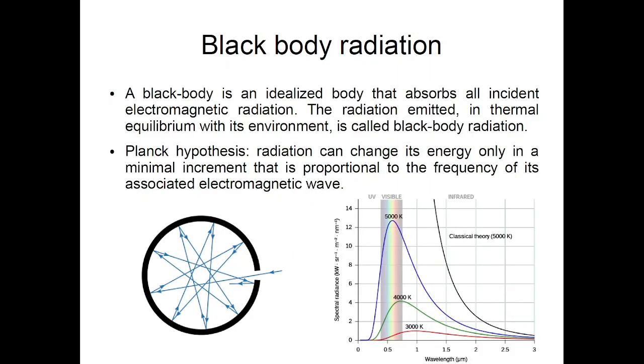So the very first evidence of a necessity for a theory beyond classical mechanics came from the experiment called nowadays black body radiation. A black body is essentially an idealization of a body that absorbs all incident electromagnetic radiation.